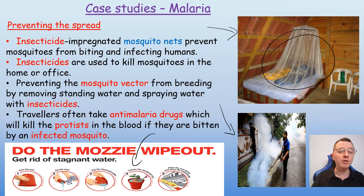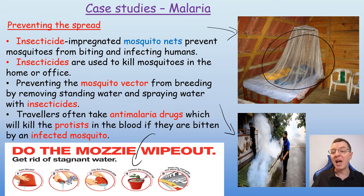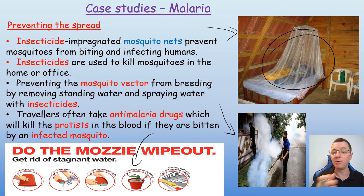Travellers to tropical regions where malaria is common often take anti-malarial drugs, which will kill the protoctist in the blood if they're bitten by an infected mosquito. However, these drugs are often quite expensive and you need to take them for a number of months both before, during and after your travelling.